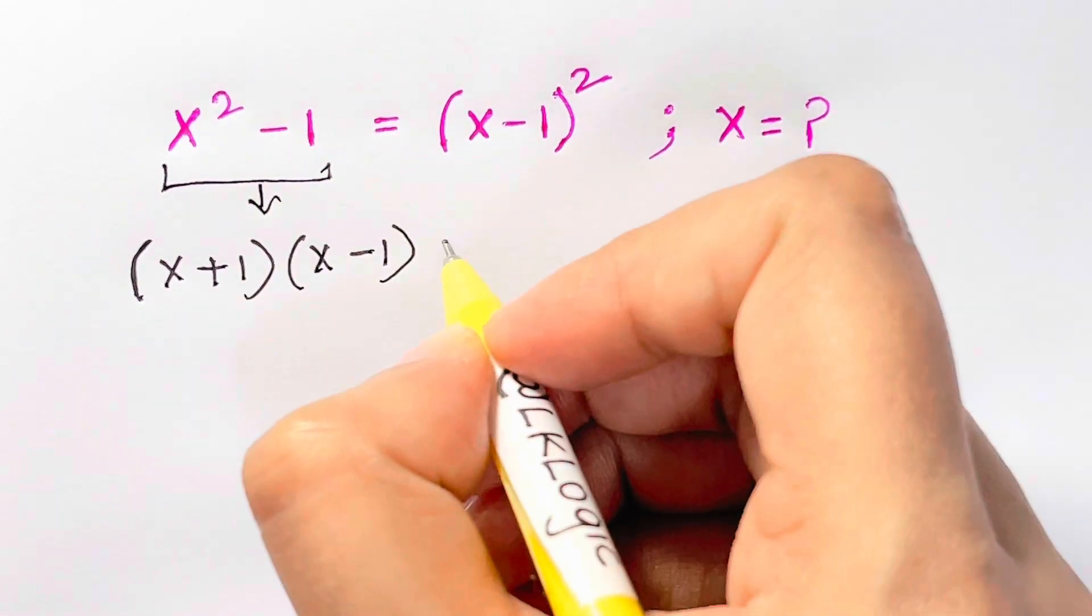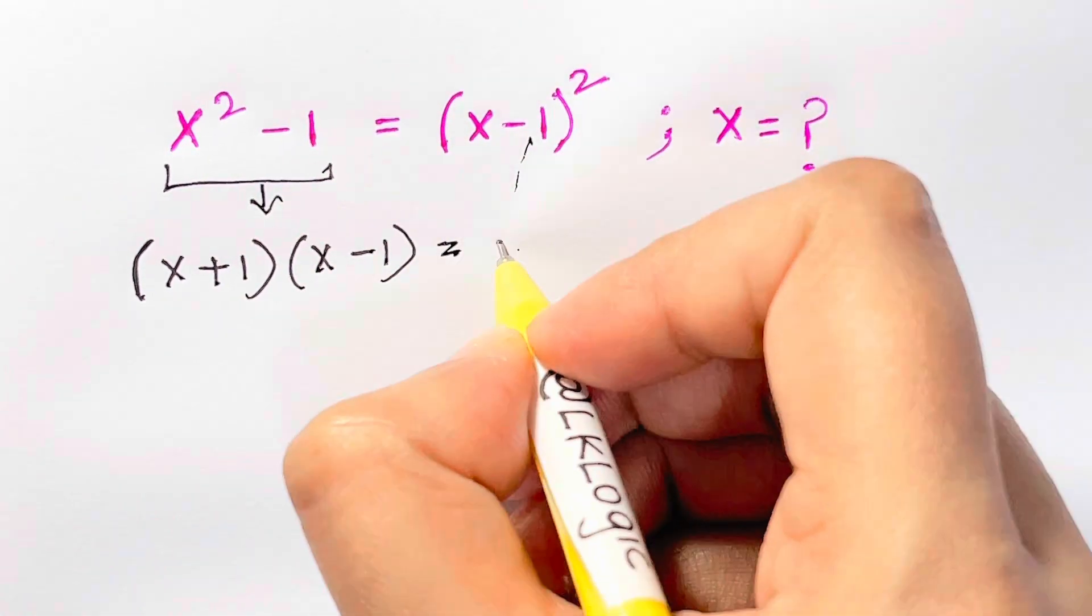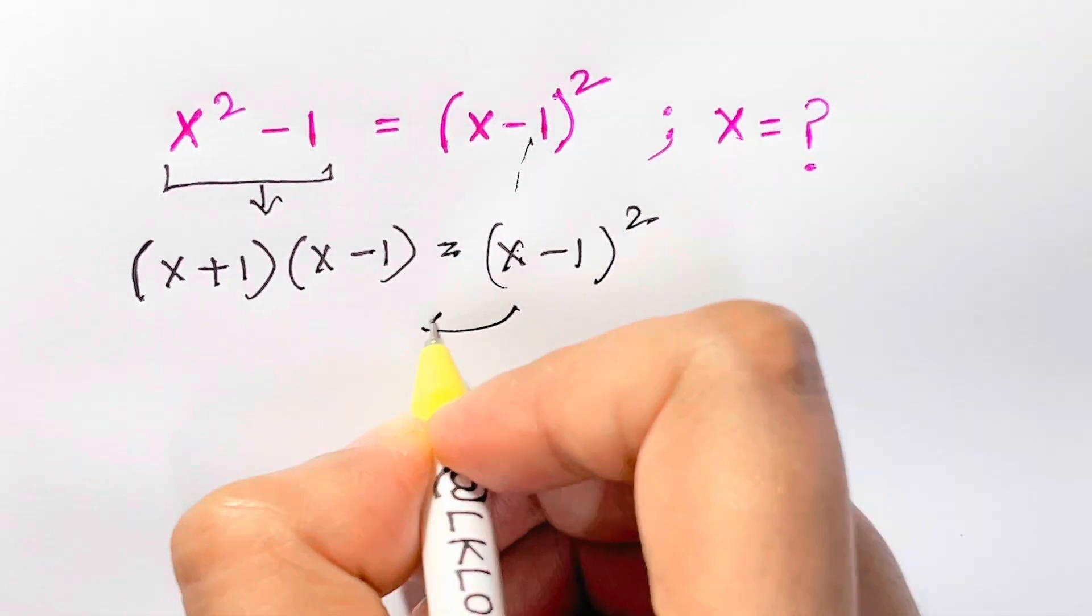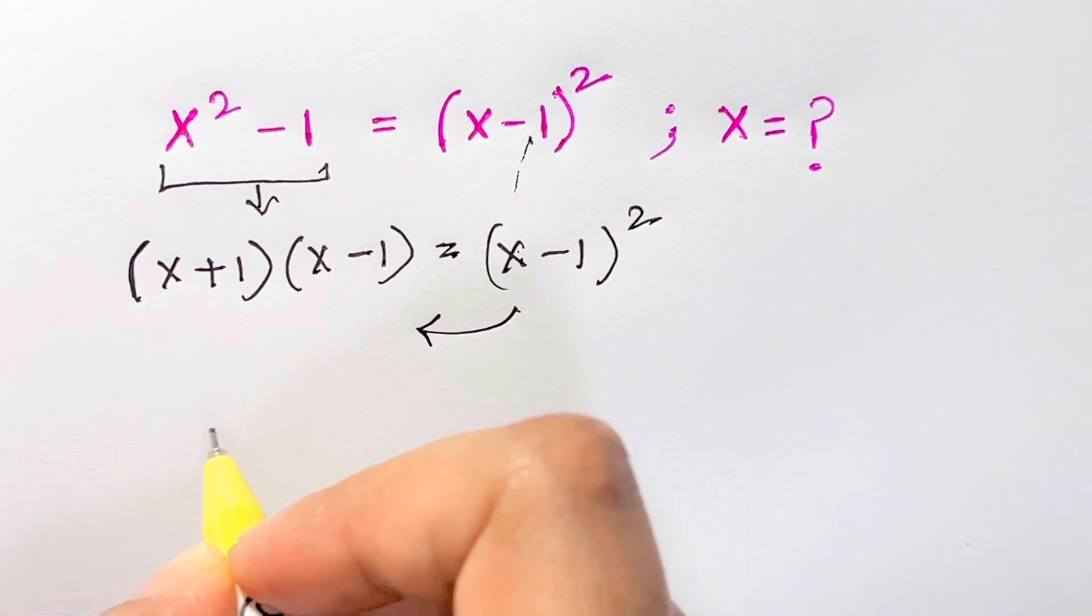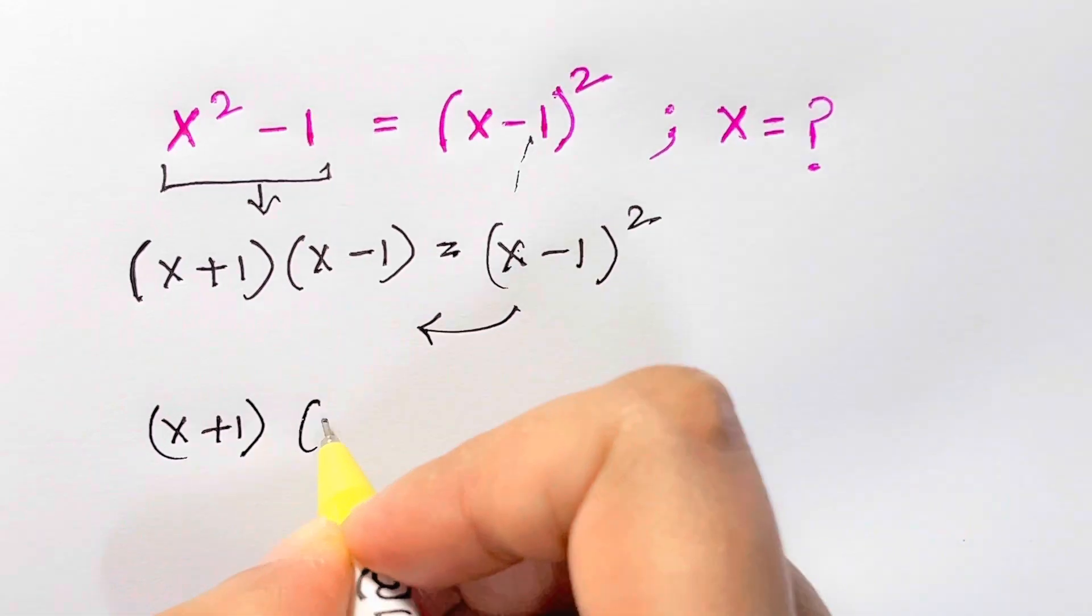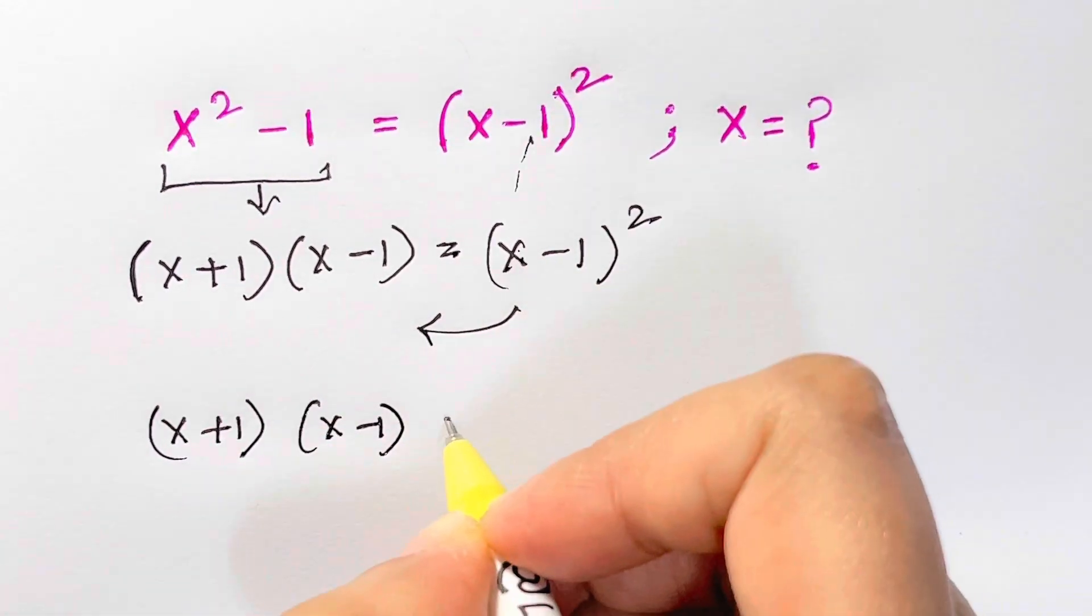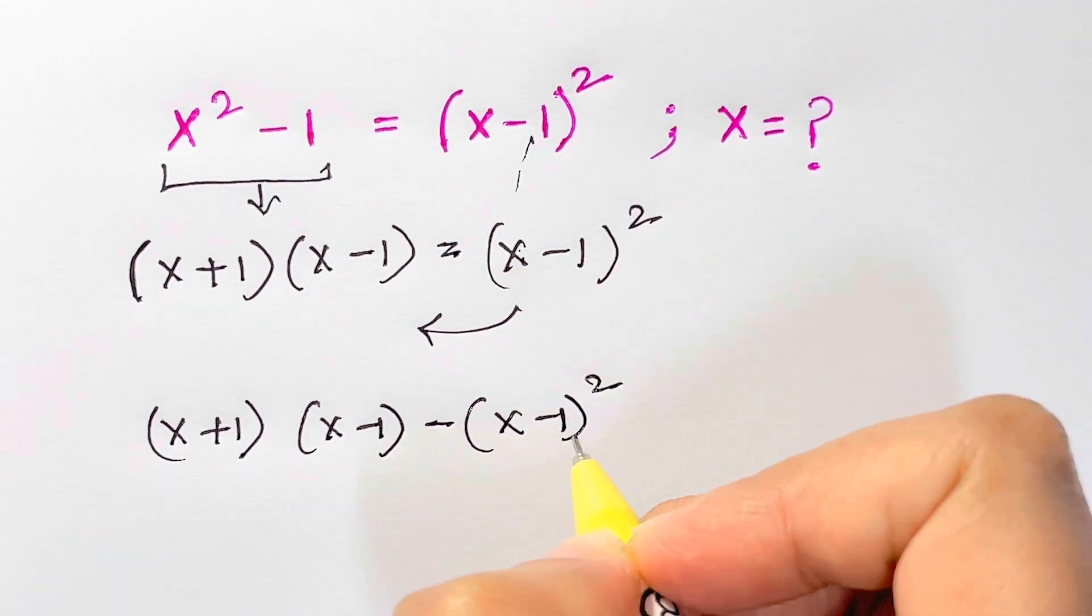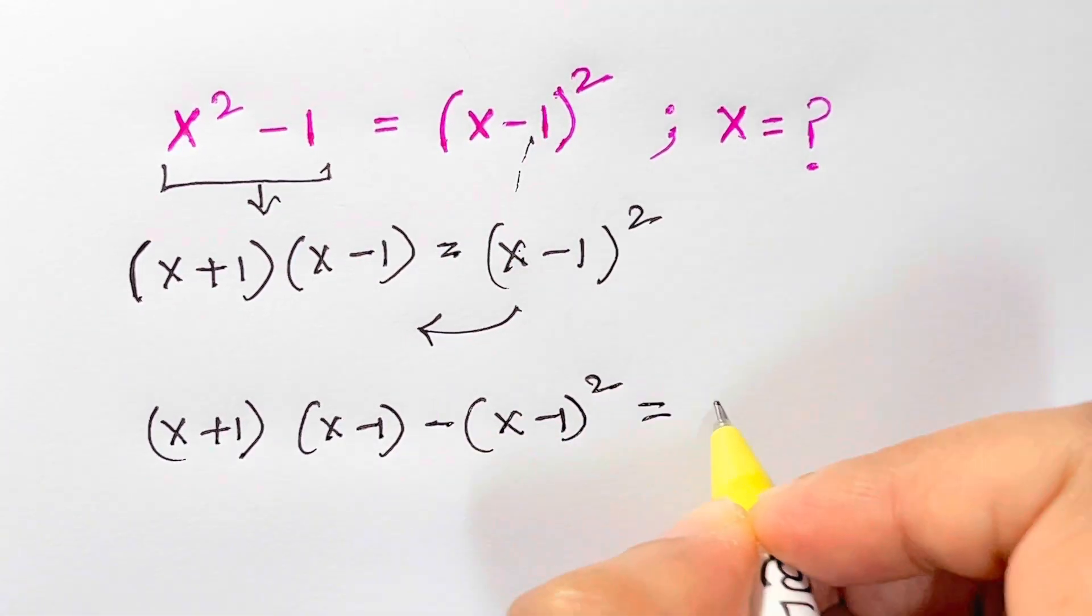Right? Which is equal to, I have x minus 1 the whole squared. Let me bring it this side. So what happens? I have x plus 1 times x minus 1 minus x minus 1 the whole squared is equal to 0.